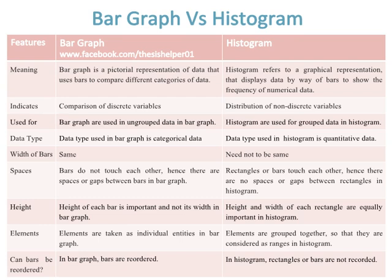Bar graphs are used for ungrouped data while histograms are used for grouped data. Data type used in bar graph is categorical data while data type used in histogram is quantitative data. Width of bars are the same in bar graph while width of rectangles need not be the same in histogram.